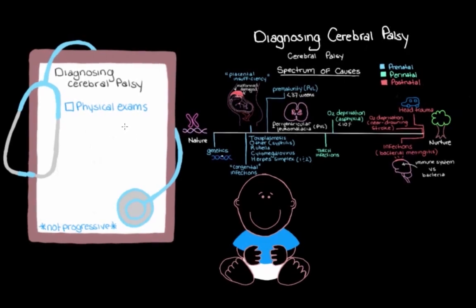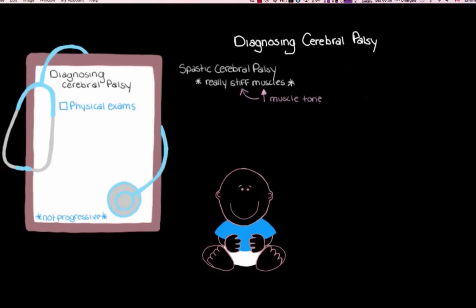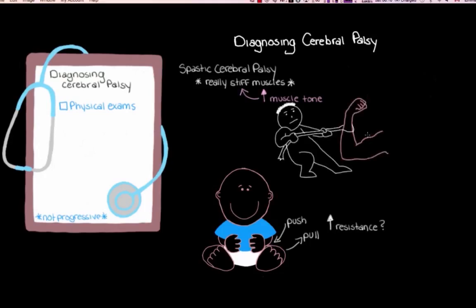The most common type is spastic cerebral palsy, and one of the main signs is really stiff muscles due to increased muscle tone. We can push and pull on the child's arms and legs to check for more resistance than normal. Imagine trying to pull down on someone's arm while they're flexing — their arm feels stiff and you feel more resistance than if they relaxed. In spastic cerebral palsy, it's as if the muscles are permanently on and resisting efforts to move them.